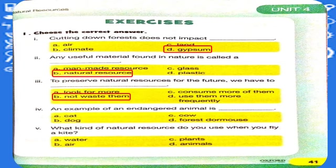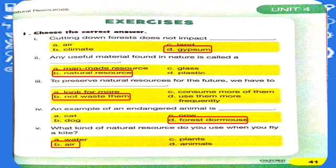Number four: an example of an endangered animal is dash. A. Cat. B. Dog. C. Cow. D. Forest dormouse. And our answer is D — forest dormouse. Number five: what kind of natural resource do you use when you fly a kite? A. Water. B. Air. C. Plants. D. Animals. And our answer is B — air.